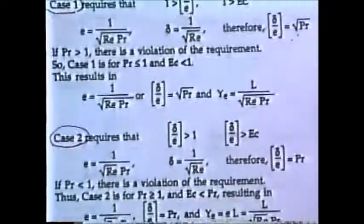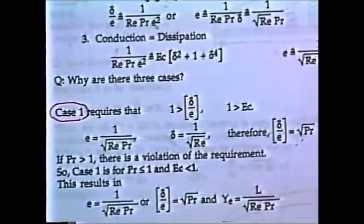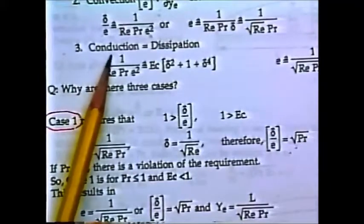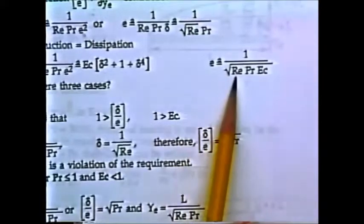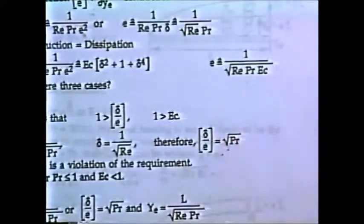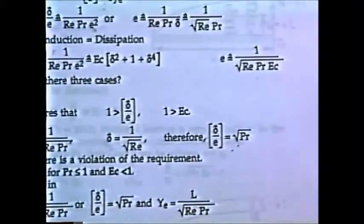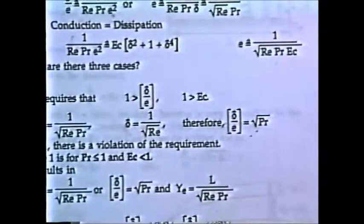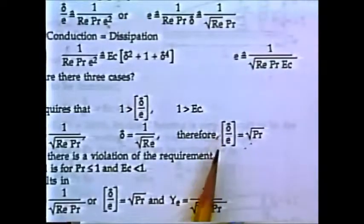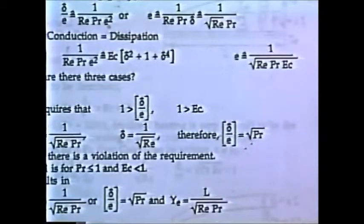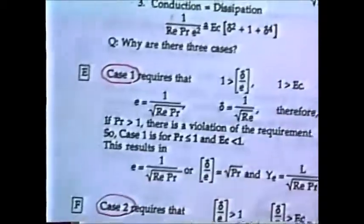If the other convection term dominates, equate that one and Prandtl number shows up without the square root. So when convection and conduction balance, the Prandtl number is raised to about one-third to one-half power, and Reynolds number seems to always appear as the square root. The third case is when conduction and dissipation balance, meaning the layer is created by frictional heating. If you equate those, the layer includes the square root of Reynolds number, the square root of Prandtl number, and additionally the square root of the Eckert number.